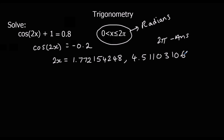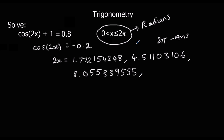We've got two answers between 0 and 2 pi, but because they're 2x, we'll need to halve them. When we halve them, we need the results to still be between 0 and 2 pi, so we need to generate more answers first. We add 2 pi to the first answer: 1.772154248 + 2 pi = 8.05533955. We also add 2 pi to the second: 4.51103106 + 2 pi = 10.79421637.